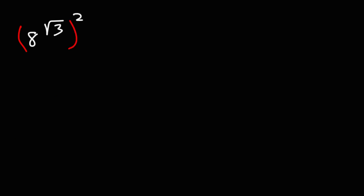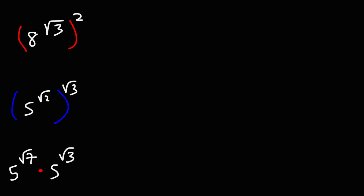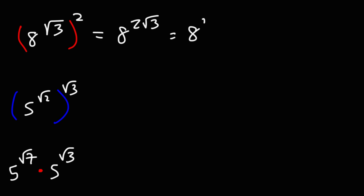For 8^√3 raised to the 2nd power: we're raising one exponent to another, so we can multiply the two exponents. This becomes 8 raised to 2 times √3. We can reverse these and write it as 8 squared raised to the √3. 8 squared, which is 8 times 8, is 64. So the final answer is 64^√3.